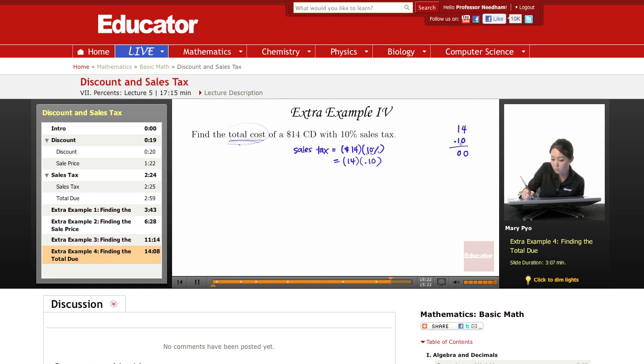0, 0. 1 times 4 is 4. 1 times 1 is 1. Put 0s in those spaces, add them. So 0 plus 1 is 1, 0 plus 4 is 4, 0 plus 0 is 0, 140.